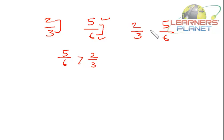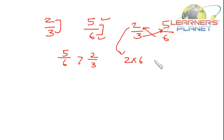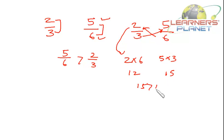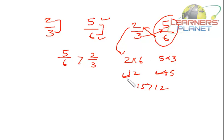For 2/3 and 5/6, do cross multiplication. We start from the numerator of the left-hand side fraction: 2 × 6 = 12, and 5 × 3 = 15. Since 15 is greater than 12, the fraction 5/6 will be greater than 2/3.